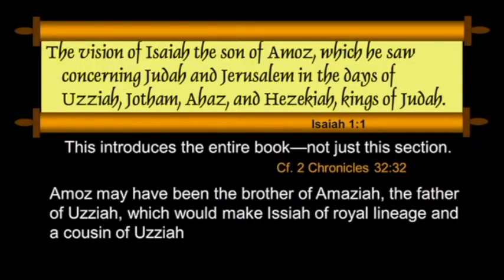Amos here is not the Amos of the prophetic book. It's spelled with different first and last letters in the Hebrew. He may have been the brother of Amaziah, the father of the king, Uzziah, which would make Isaiah of royal lineage and a cousin of the king.